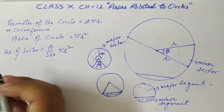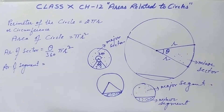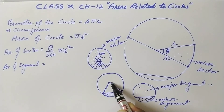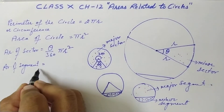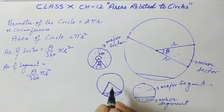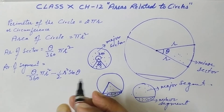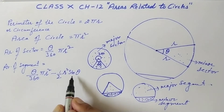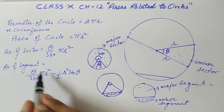The area of a segment is: area of the sector minus area of the triangle. So: Area of segment = θ/360 × πr² − ½r²sinθ. Here, ½r²sinθ is the area of the triangle formed by the two radii and the chord, where θ is the angle at the center.